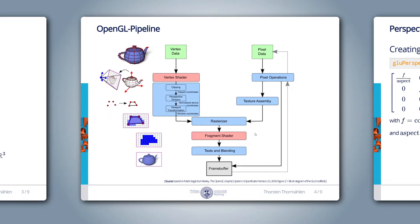For each pixel of a rasterized primitive, a fragment shader is executed in parallel. The task of the fragment shader is to compute an output color. But before the color is written to the framebuffer, the fragment must pass several tests. For example, if the depth test is enabled, the color is only written to the framebuffer if the current fragment is closer to the camera than previous fragments written to the same pixel location. This is why the Z-coordinate of the normalized device coordinates is very important. The rasterizer interpolates this per-vertex Z-coordinate for each fragment, such that a per-fragment depth test can be performed.